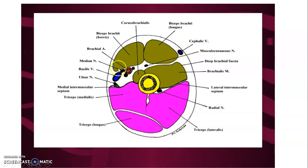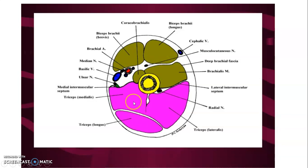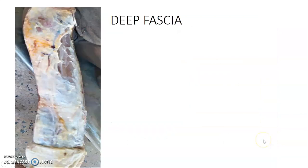The cephalic vein is on the lateral aspect, and the basilic vein on the medial aspect. The brachial artery runs here. The musculocutaneous nerve supplies the anterior compartment, the radial nerve supplies muscles in the posterior compartment, and the median nerve runs alongside the brachial artery, traversing to supply muscles in the forearm.